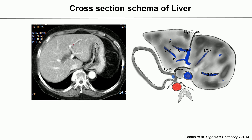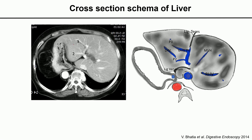This CT image shows the usual finding. To understand EUS imaging of the liver, the EUS image is from caudal to cranial direction, which is the reverse of conventional CT, which goes from cranial to caudal. This scan direction is good for understanding.